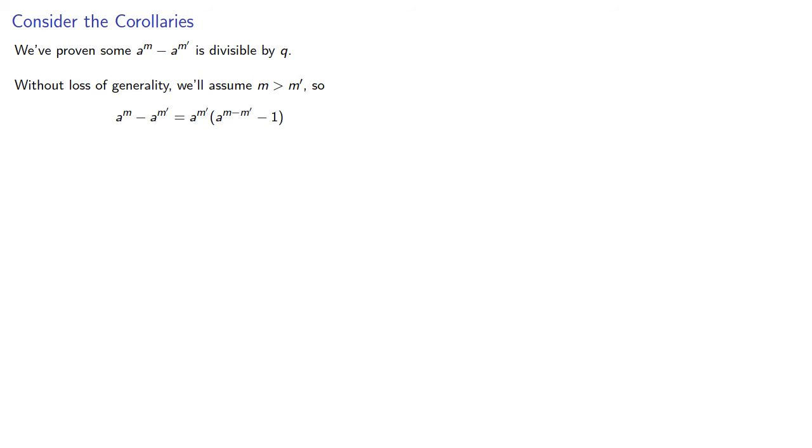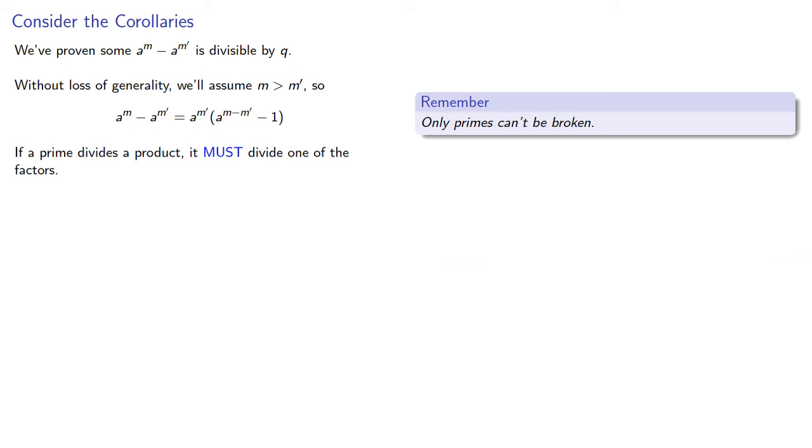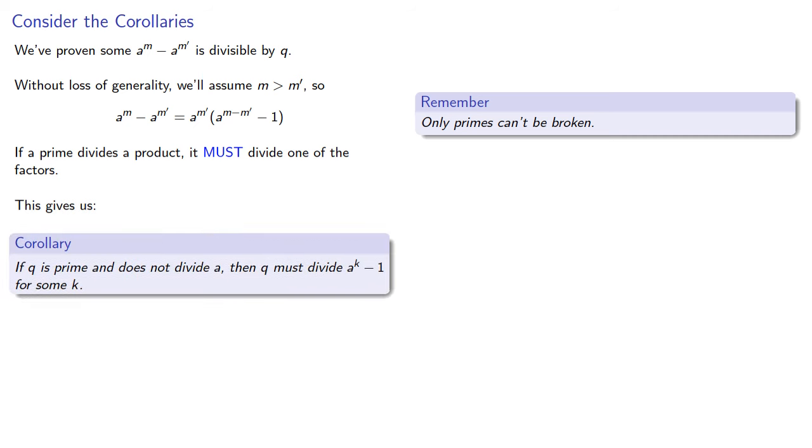Now this factorization property does hold true for prime numbers because primes can't be broken. So if a prime divides a product, it must divide one of the factors. And so this gives us the following corollary. If q is prime and does not divide a, then it must divide a^(k-1) for some k.